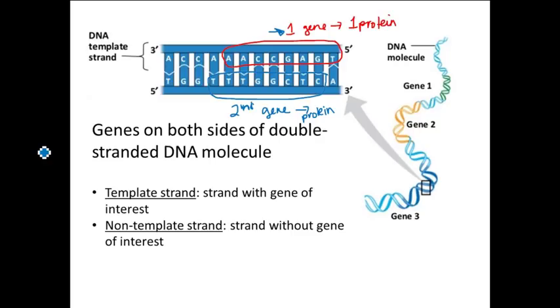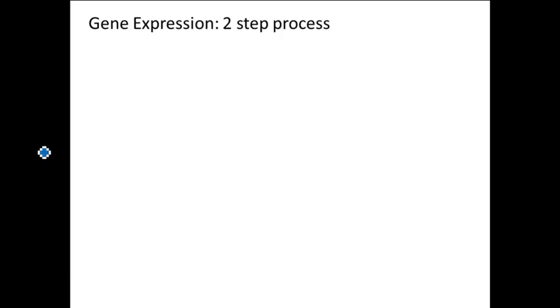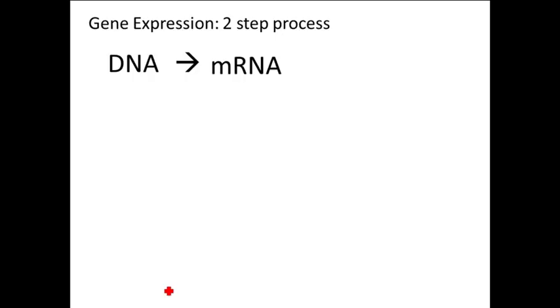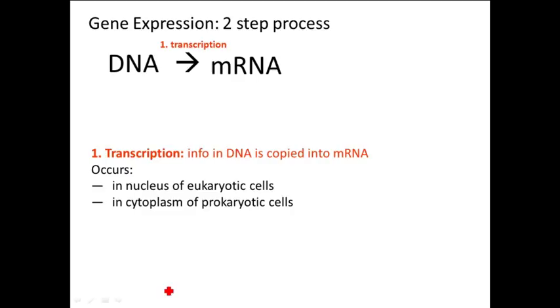Gene expression is a two-step process. The first step is taking the DNA and copying it into mRNA, and we call this transcription. In transcription, the information in the DNA is copied into the mRNA. This happens in the nucleus of eukaryotic cells, because that's where the DNA is and that's where the DNA stays. In prokaryotic cells, there's no nucleus, and the DNA is just in the cytoplasm, so that's where transcription occurs.